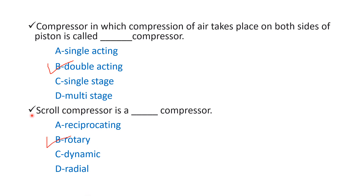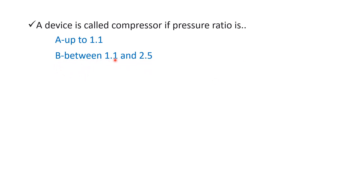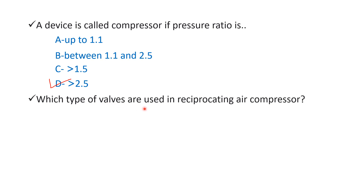Next question: a device is called a compressor if its pressure ratio is — Option A: up to 1.1, Option B: between 1.1 and 2.5, Option C: greater than 1.5, Option D: greater than 2.5. The right answer is Option D — greater than 2.5. Jab bhi pressure ratio greater than 2.5 ho, us device ko hum compressor bolenge.